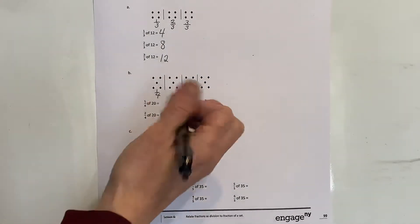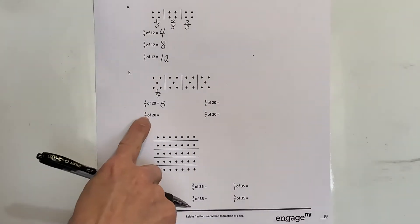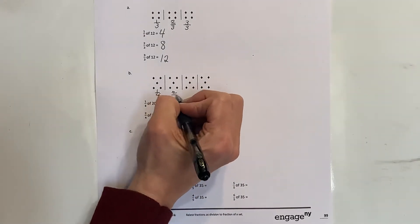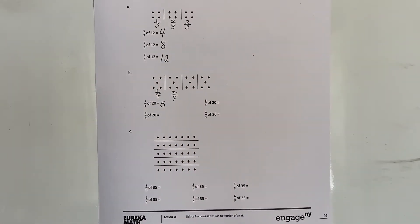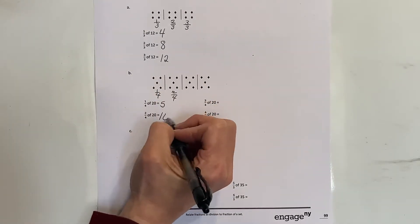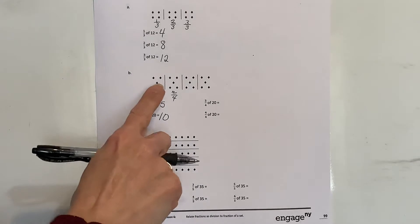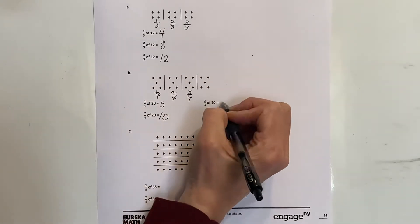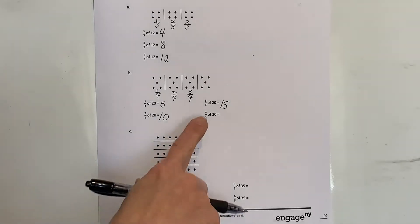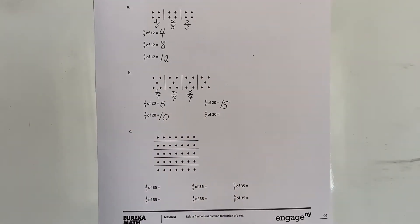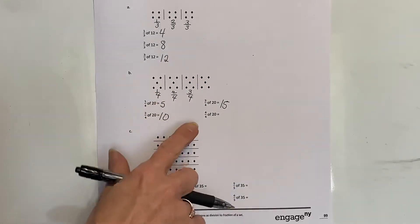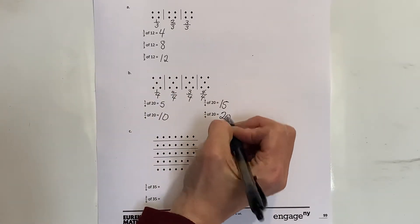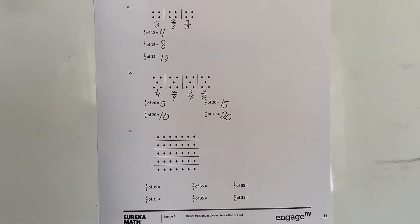So one-fourth of twenty would be five. Two-fourths - well I know two-fourths is the same as half. Half of twenty is ten. Five, ten. This is just the visual representation of what I already know. Then three-fourths - five, ten, fifteen. So three-fourths of twenty is fifteen. Four-fourths means the whole thing - all of the counters would be twenty.